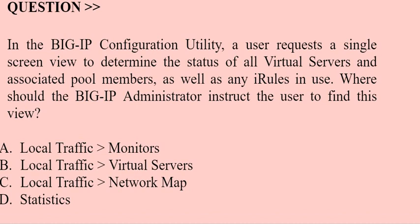Next question: In the BIG-IP configuration utility, a user requests a single screen view to determine the status of all virtual servers and associated pool members, as well as any iRules in use. Where should the BIG-IP administrator instruct the user to find this view? Option A: Local Traffic > Monitors. Option B: Local Traffic > Virtual Servers. Option C: Local Traffic > Network Map. Option D: Statistics.